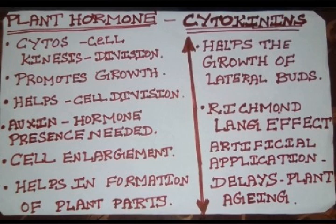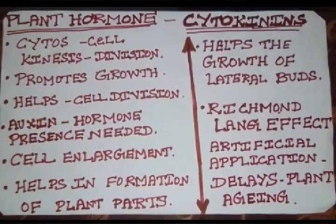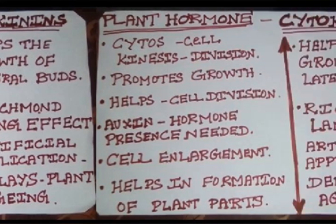This plant hormone cytokinin also helps in the growth of the lateral buds. When this hormone cytokinin is applied artificially on the plant, it delays the plant aging — that is, it delays the plant becoming older.